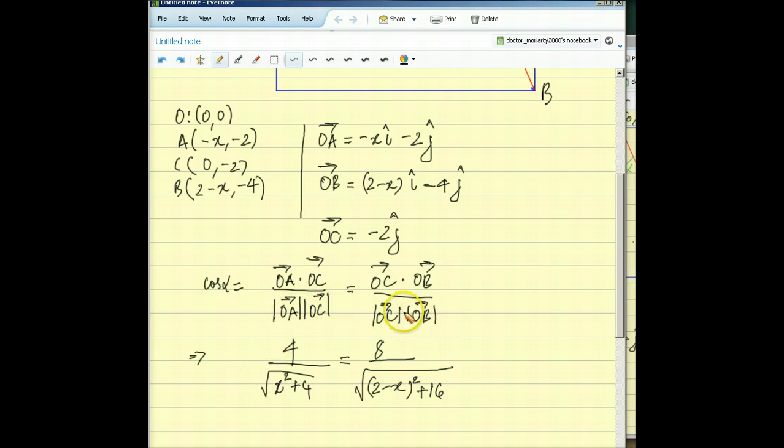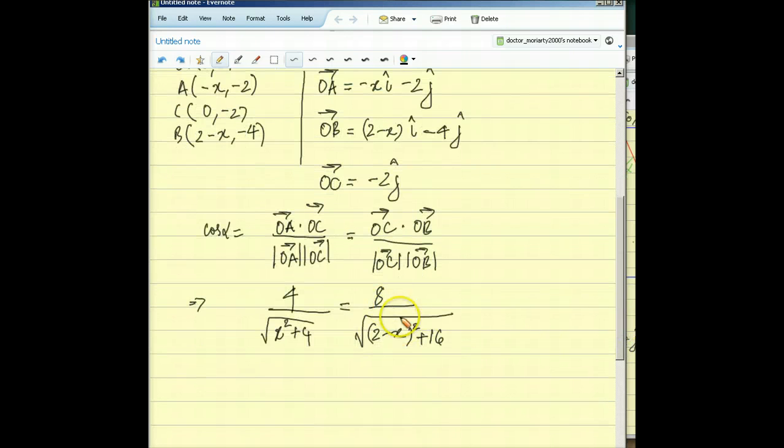In the denominators here, you can see that the magnitude of OC cancels out. So you've got magnitude of OA on this side, and if you do that, that works out to √(x²+4). On the right-hand side, you've got magnitude of OB, and that's going to be √((2-x)²+16).